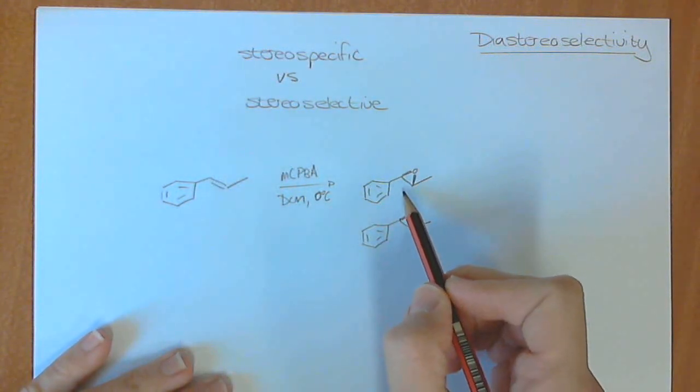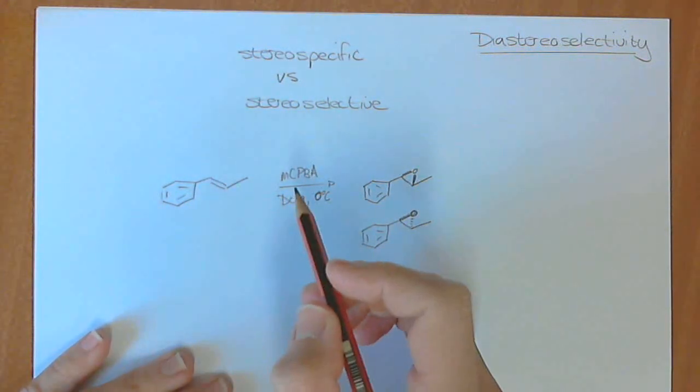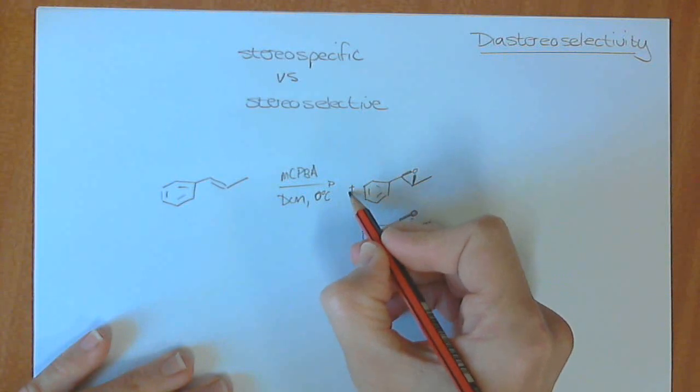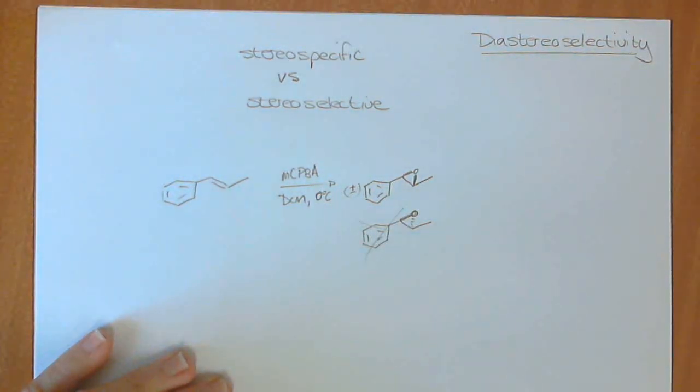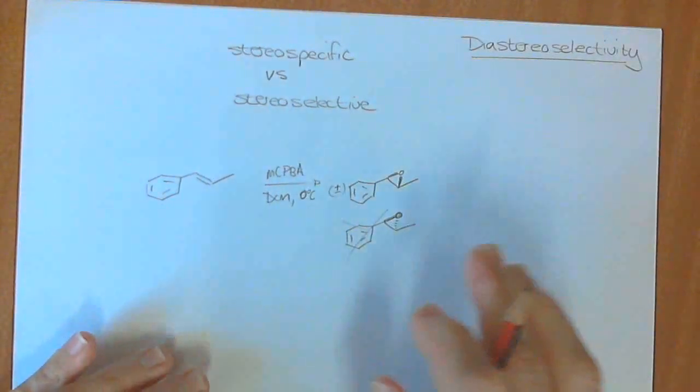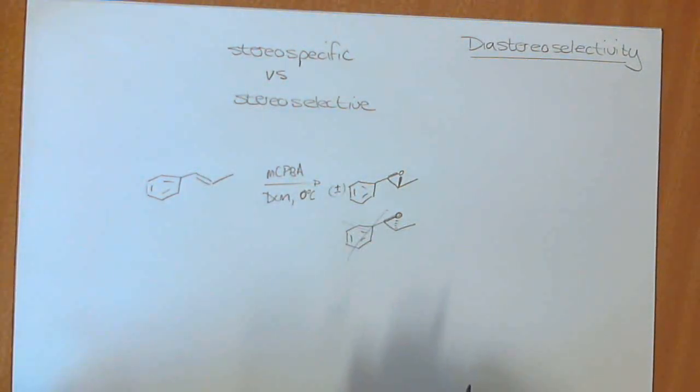And of course it can add from either the top face, which I've shown over here, or the bottom face. There's no control over that. So actually this is racemic over here, and then this one doesn't form at all. So that's an example of a stereospecific reaction, epoxidation.